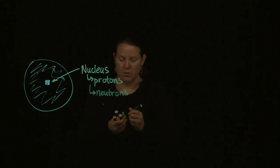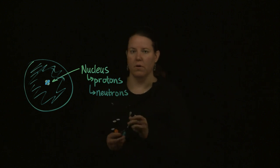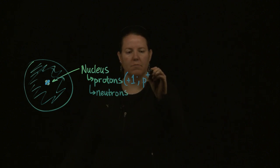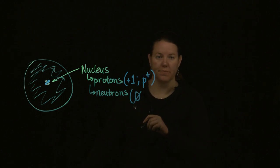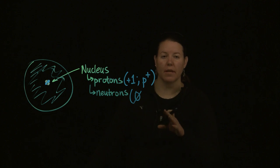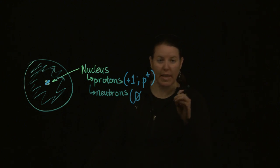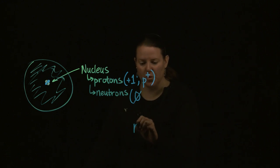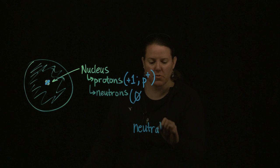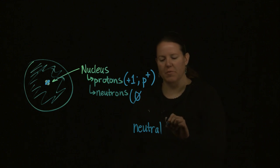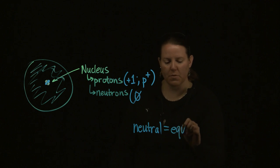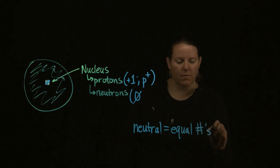Protons have a plus-one charge, and therefore are designated as p-pluses. And neutrons have no charge at all. This is different than what a lot of people think, because they think neutrons comes from neutral, which must mean that it has a neutral charge.